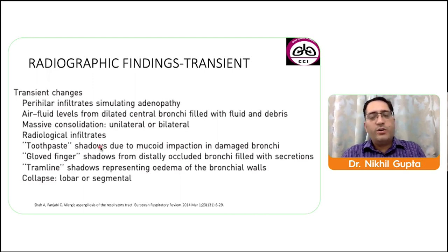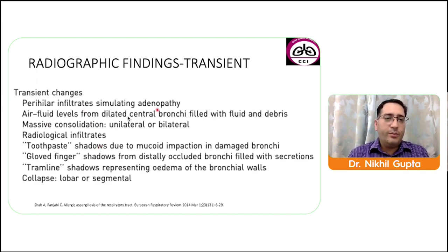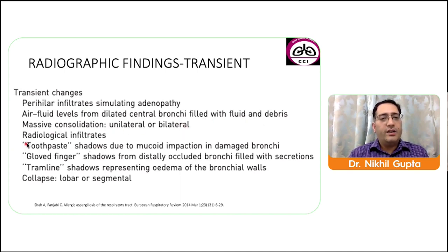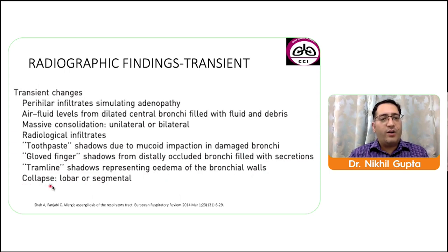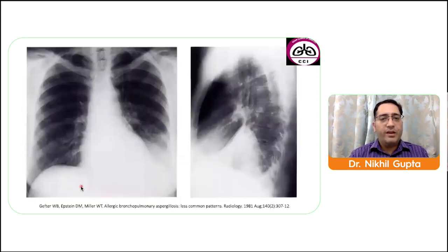Radiographic findings are divided into transient and permanent. Transient findings include perihilar infiltrates simulating adenopathy, air-fluid levels from dilated central bronchi filled with fluid, toothpaste shadows from mucoid impaction in damaged bronchi, gloved-finger shadows from distally occluded bronchi filled with secretions, and tramline shadows representing edema of bronchial walls. Collapse may be lobar or segmental. Shown is a chest X-ray of ABPA simulating carcinoma of the lung, with atelectasis of basal segments of left lower lobe.